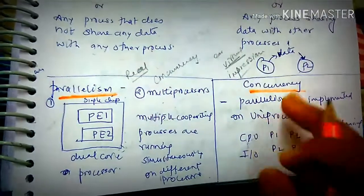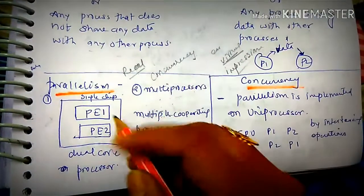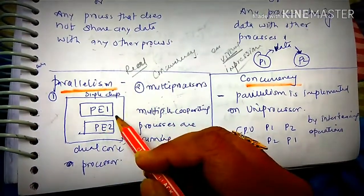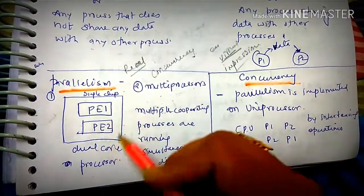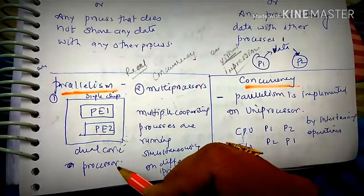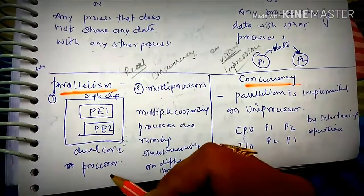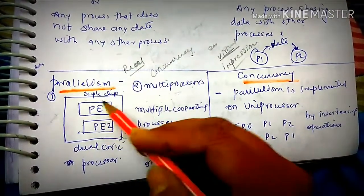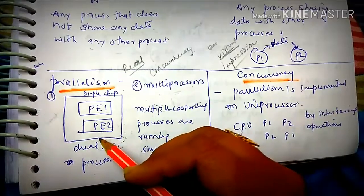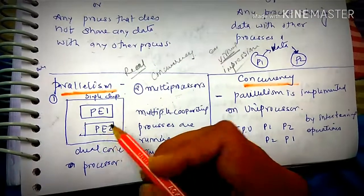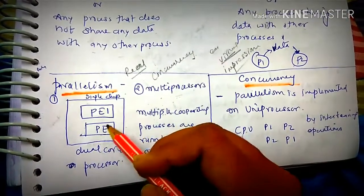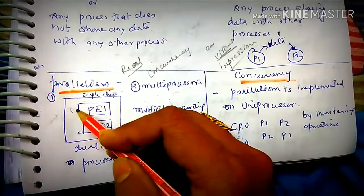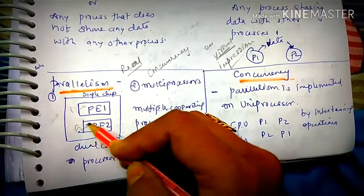Parallelism is achieved using multi-core or multi-CPU systems — for example, dual-core or quad-core processors. In a single chip with multiple processing elements, if there are multiple processes, each process can execute on a separate processing element simultaneously.